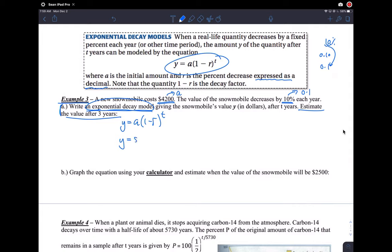So $4,200 here, 1 minus 0.1 to the T. We were not given a T value yet. That's the model. So this answers this part of the question. That's the model.